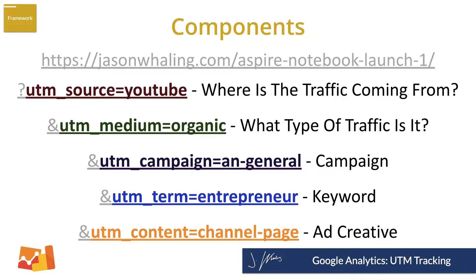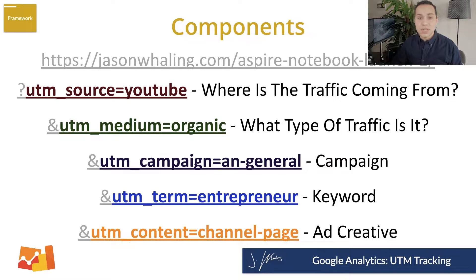Next we have campaign, and this is going to be something you specifically set. If you have a particular sales funnel, product, or promotion, this is typically where you put that name — irrespective of where the traffic is coming from. Then term and content: term allows you to tell Google Analytics the keyword — you probably won't use term much unless you're doing pay-per-click advertising targeting keywords. Content tells you the specific ad, blog post, video, or Facebook post the traffic came from. With these five elements you can get really detailed on telling Google Analytics exactly where all your traffic is coming from.